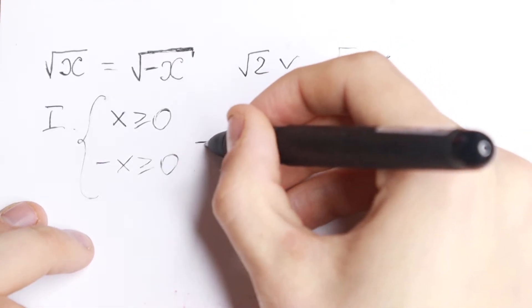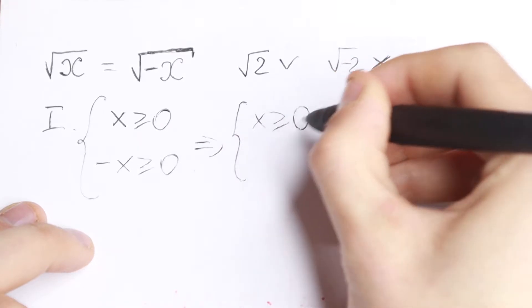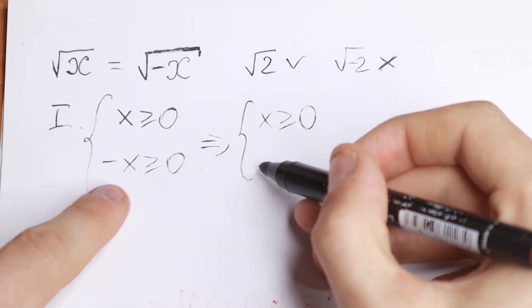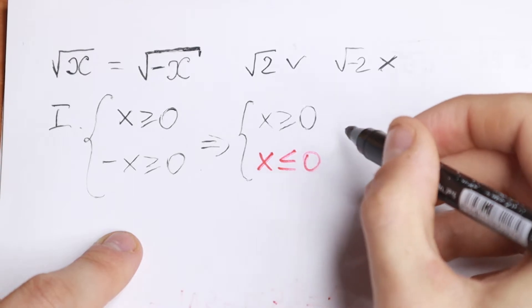How can we solve this? First, we have x greater than or equal to zero. For the second inequality, if we multiply by minus one, we get x is less than or equal to zero.